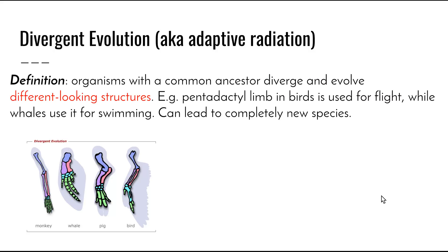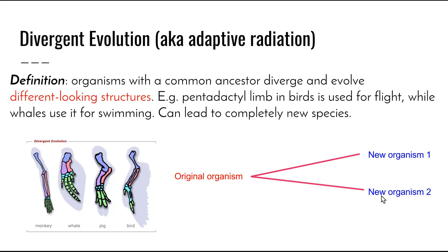That brings us to divergent evolution, which is sometimes also referred to as adaptive radiation. It's the evolution of one species into a number of different species — organisms with a common ancestor diverge and evolve into different-looking organisms or different structures. For example, the pentadactyl limb in birds is used for flight, in whales for swimming, and in humans for grabbing and picking things up. Starting from an original organism, based on changes in the environment two new organisms evolve that have similar structures, but each structure has developed a completely different use, leading to completely new species.